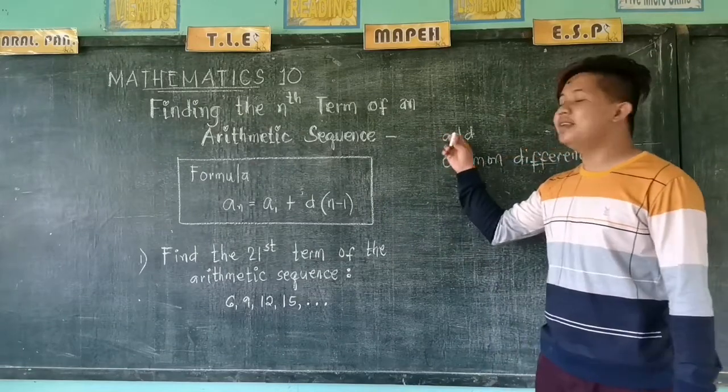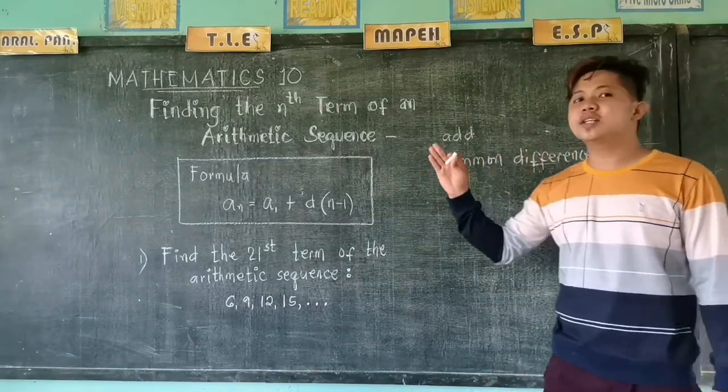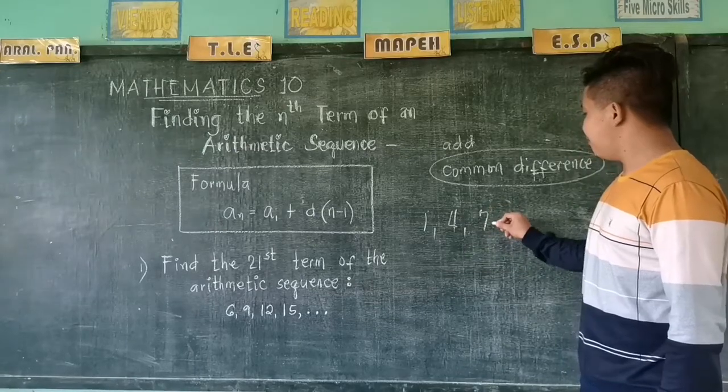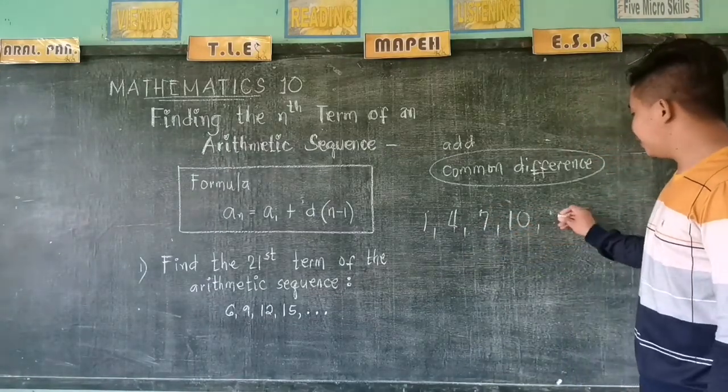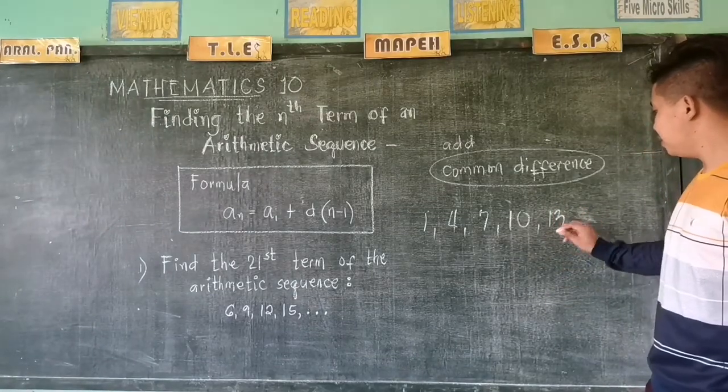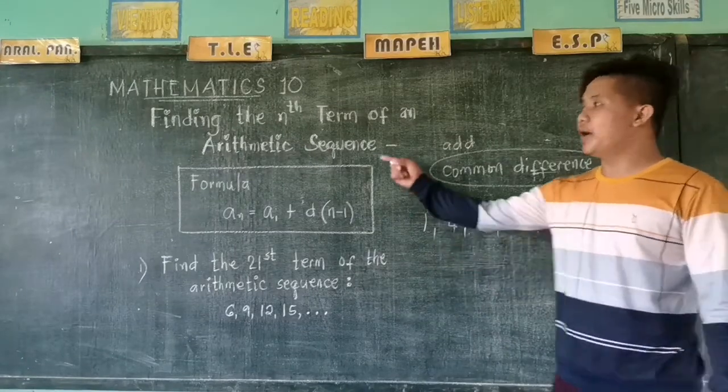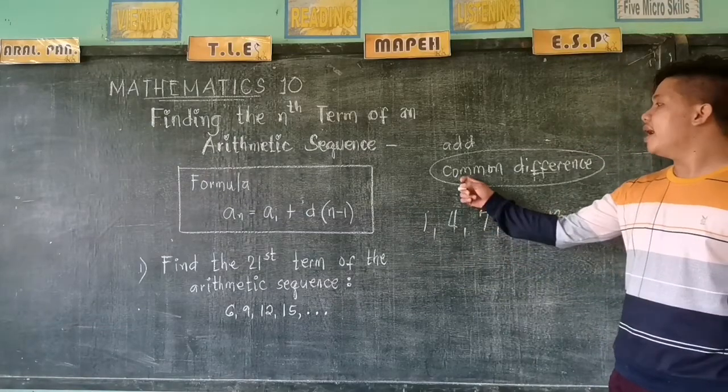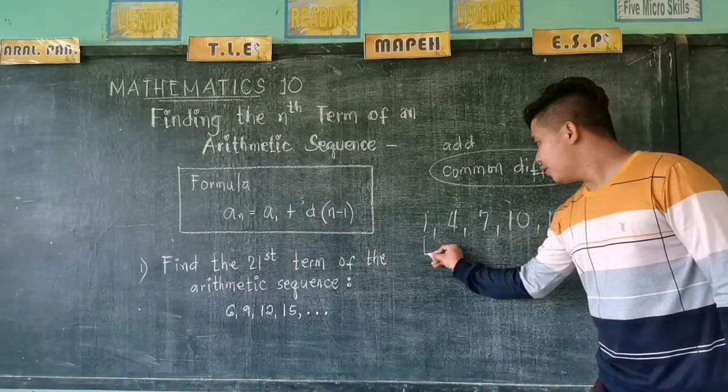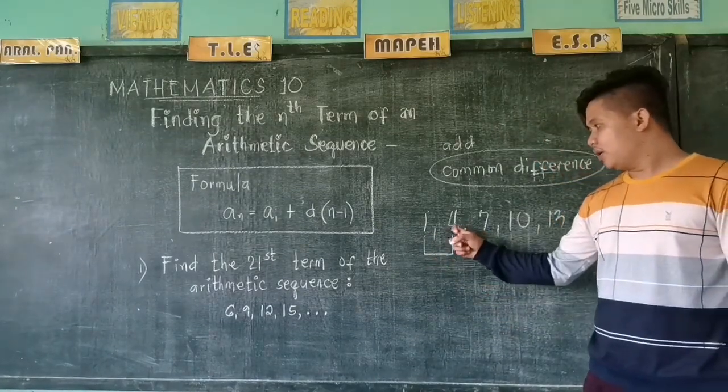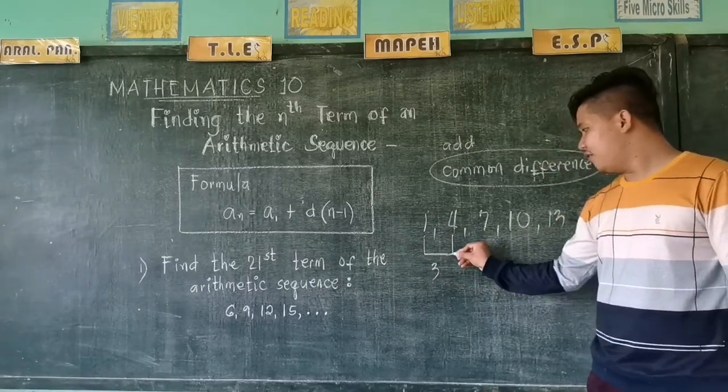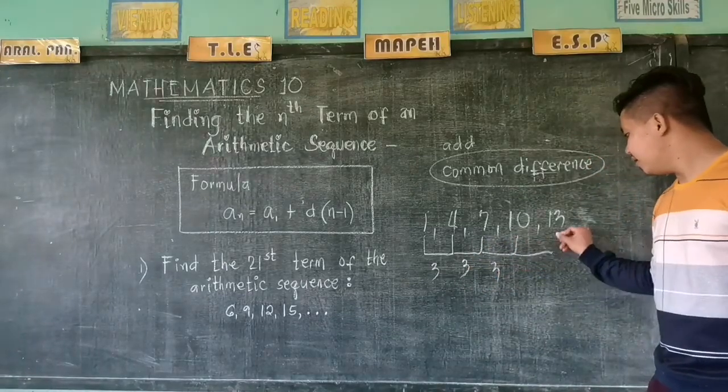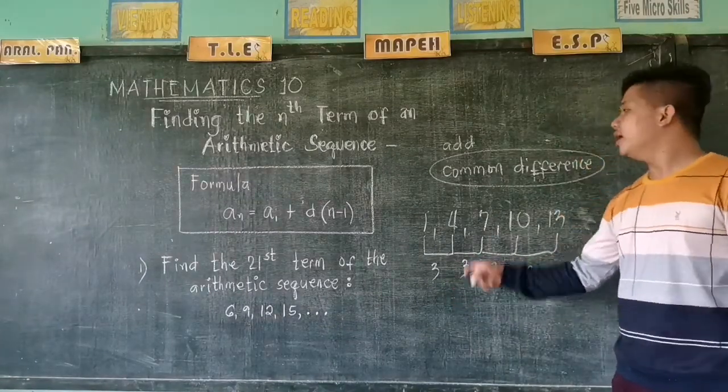Let us just add the constant, which is called the common difference. I will give you an example: 1, 4, 7, 10, 13. This is an example of an arithmetic sequence. We can say that it is an example of an arithmetic sequence if there is a common difference. The difference between 4 and 1 is 3. The difference between 7 and 4 is 3, the same as this. So 3 is now the common difference.